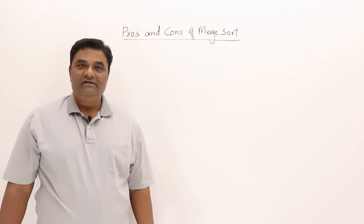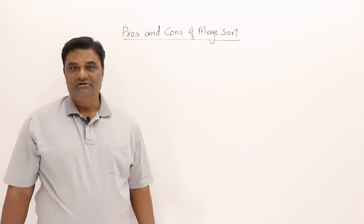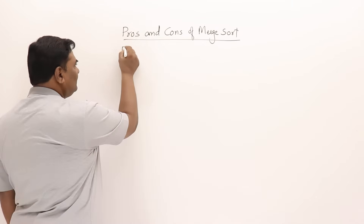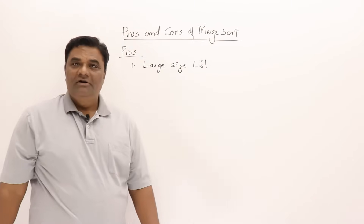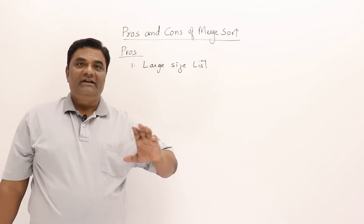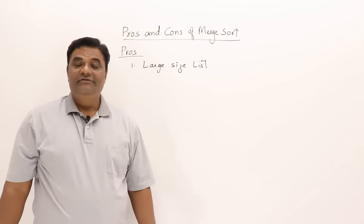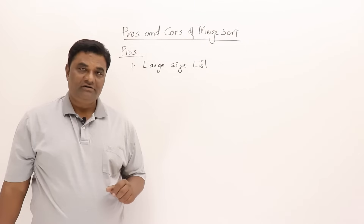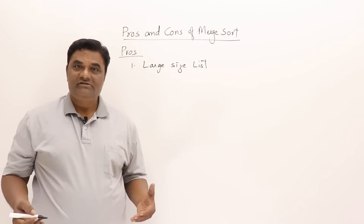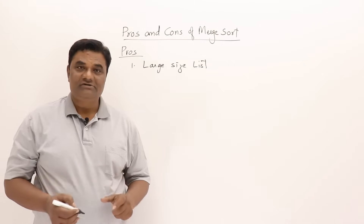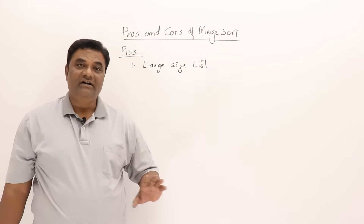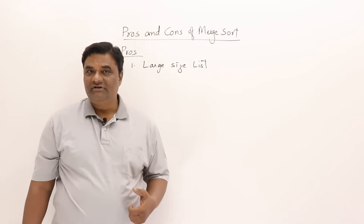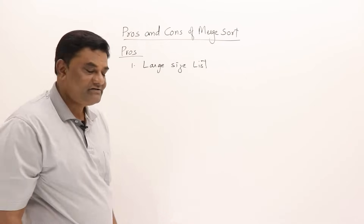Let us look at the pros and cons of merge sort. First, the pros. Merge sort is suitable for very large size lists. If you have millions of numbers or millions of records, you can sort them using merge sort. No other sort can support very large size lists — I'll give the reason afterwards.